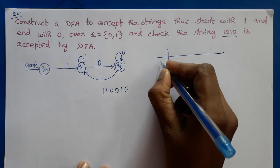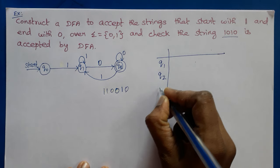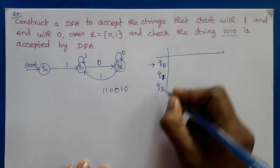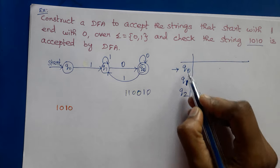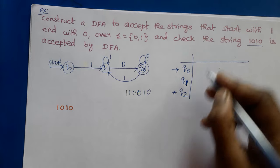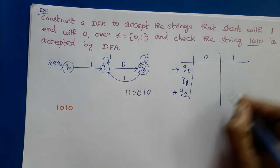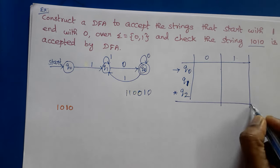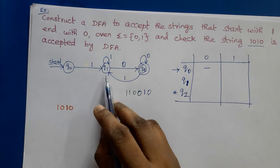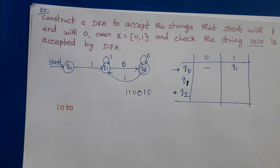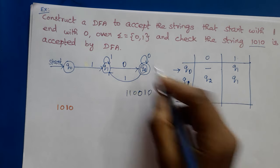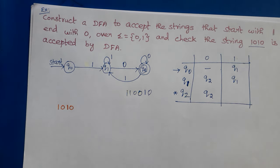We can draw the transition table. The states are Q0, Q1, Q2. Q0 is the start state and Q2 is the final state (marked with star). Input symbols are 0 and 1. For Q0: input 0 has no transition, input 1 goes to Q1. For Q1: input 0 goes to Q2, input 1 goes to Q1. For Q2: input 0 goes to Q2, input 1 goes to Q1.